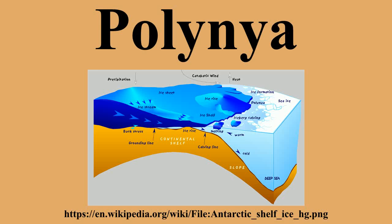A polynya is an area of open water surrounded by sea ice. It is now used as a geographical term for an area of unfrozen sea within the ice pack. It is a loan word from Russian, which refers to a natural ice hole, and was adopted in the 19th century by polar explorers to describe navigable portions of the sea.